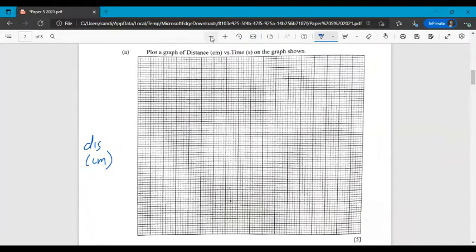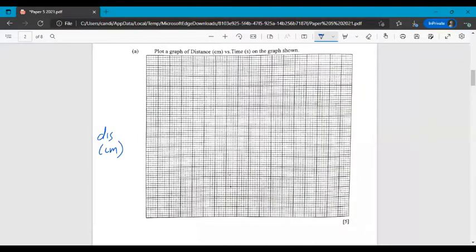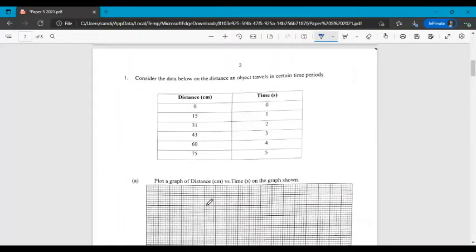So let's just make this a little smaller. Make sure you label your axes. You put your quantity name and your units in bracket. Then we're going to section off our axes that we're going to write in our intervals. We need to look at the data, the range of data that we're given.